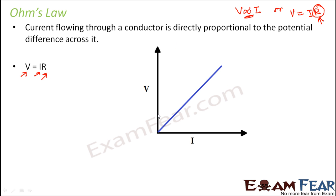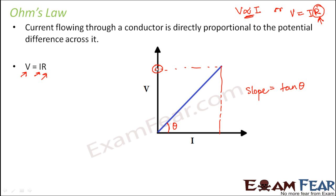Looking at the V-I graph, as current increases voltage also increases. The slope of this line gives the value of resistance. If this angle is theta, then the slope is tan θ. For triangle ABC, tan θ equals AC divided by BC, where AC represents voltage and BC represents current. So tan θ equals V divided by I, and since V/I equals R, the slope of the graph gives us the value of resistance.